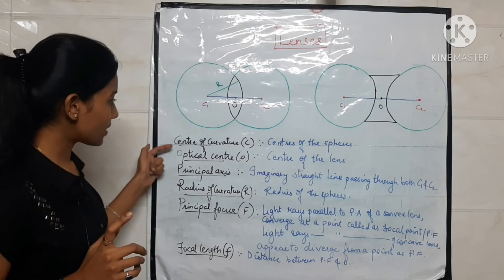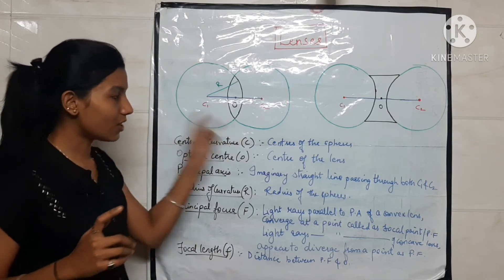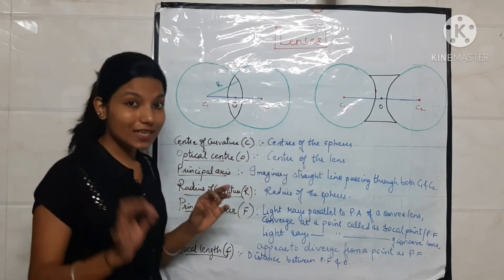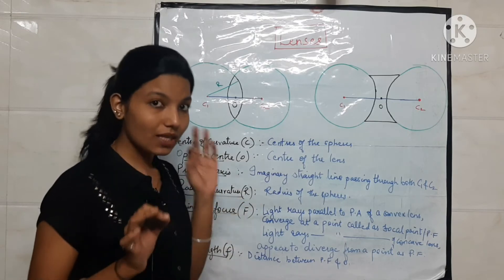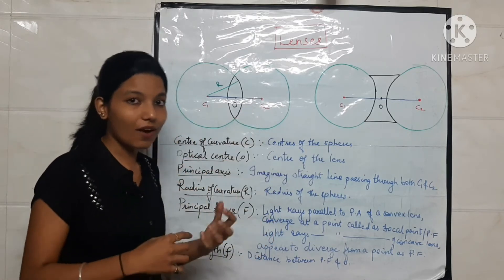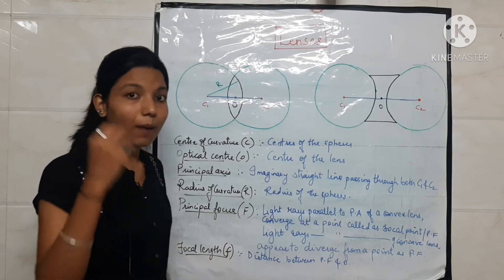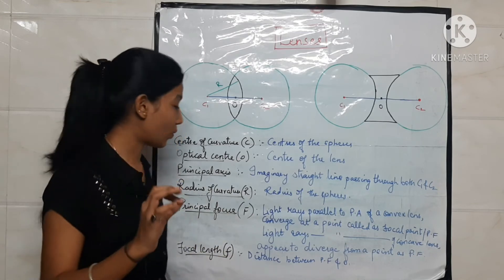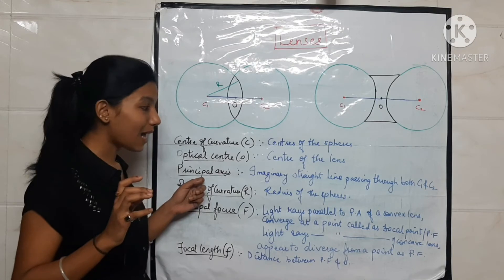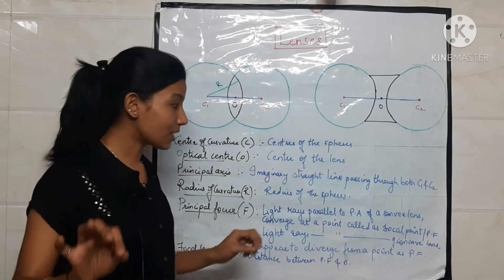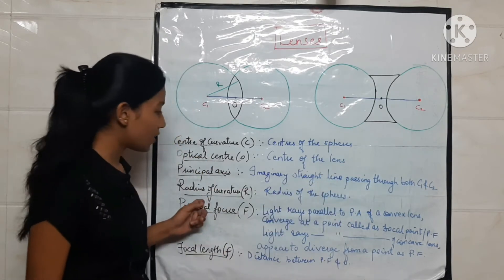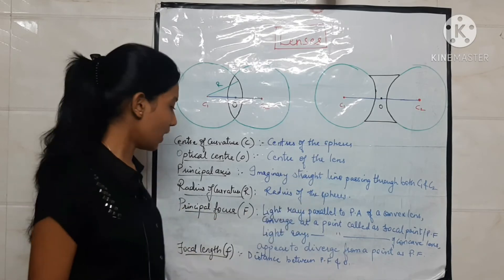To summarize the terms so far: center of curvature means the centers of the spheres from which the lens is made; optical center means the center of the lens itself; principal axis is the imaginary straight line passing through both centers C1 and C2 and the optical center; radius of curvature is the radius of those spheres. These definitions are given — write them properly.